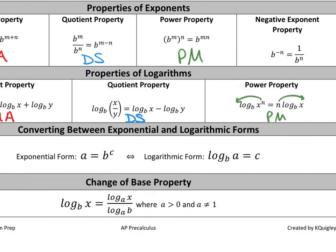The log loop is vital — there are many AP test questions asking you to solve a logarithm or exponential, and the log loop is how we do it. The base of the exponential and the base of the logarithm stay the same — the base never changes. You loop the other two. In exponential form, the base is next to C; when you convert to logarithm form, the base is next to A. That's how we go back and forth between exponential and logarithm.